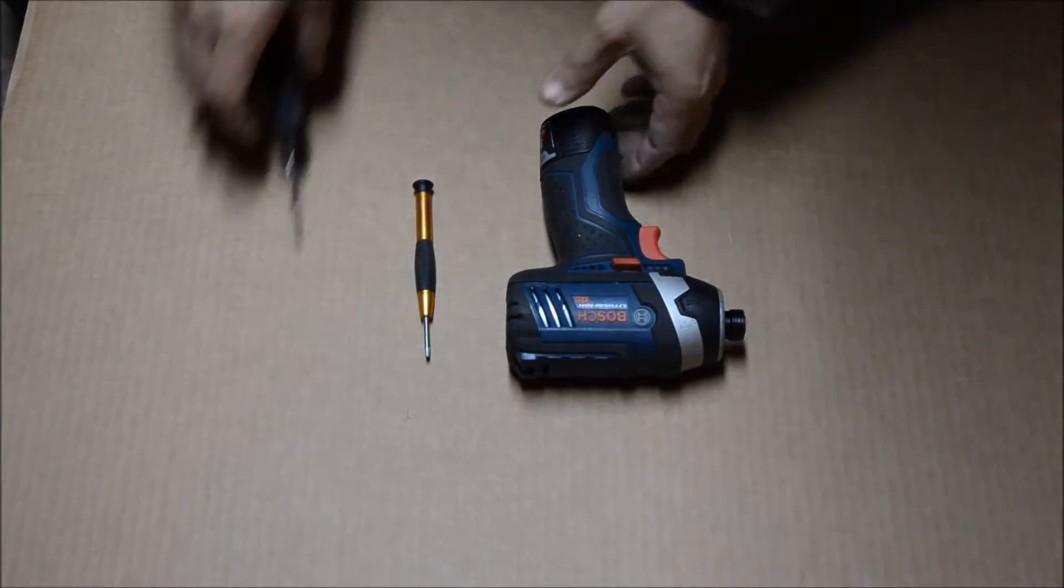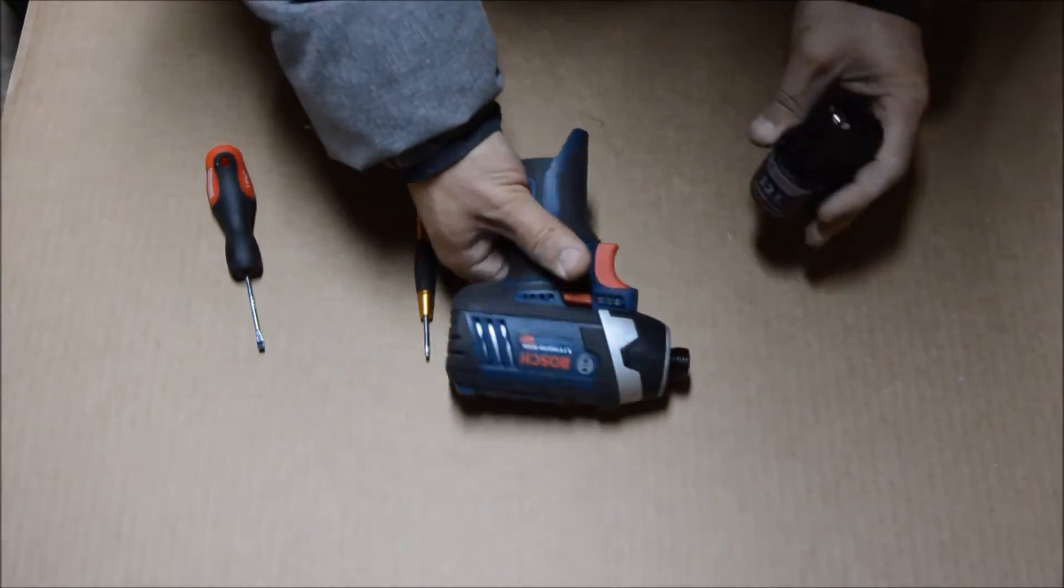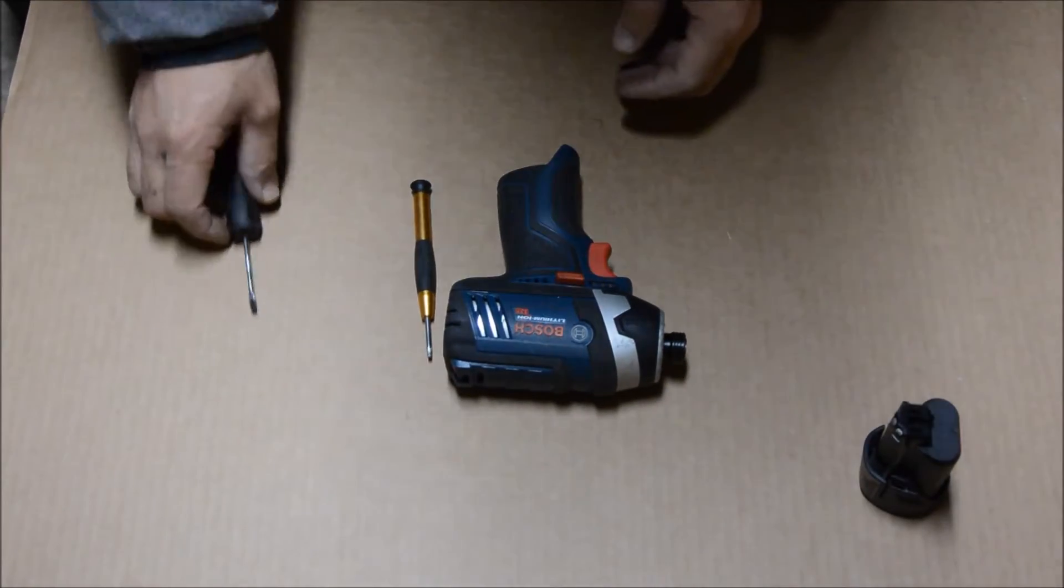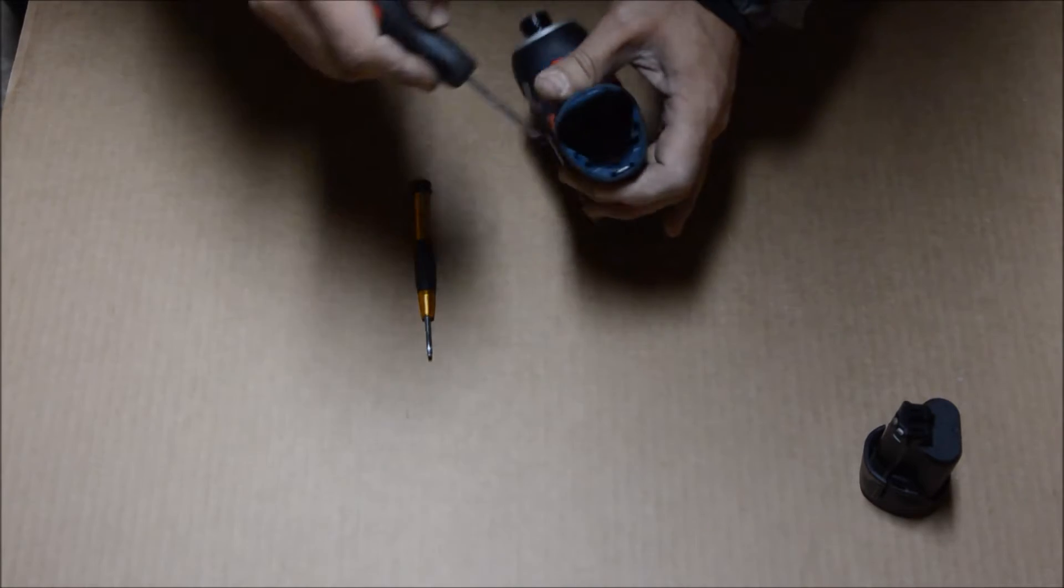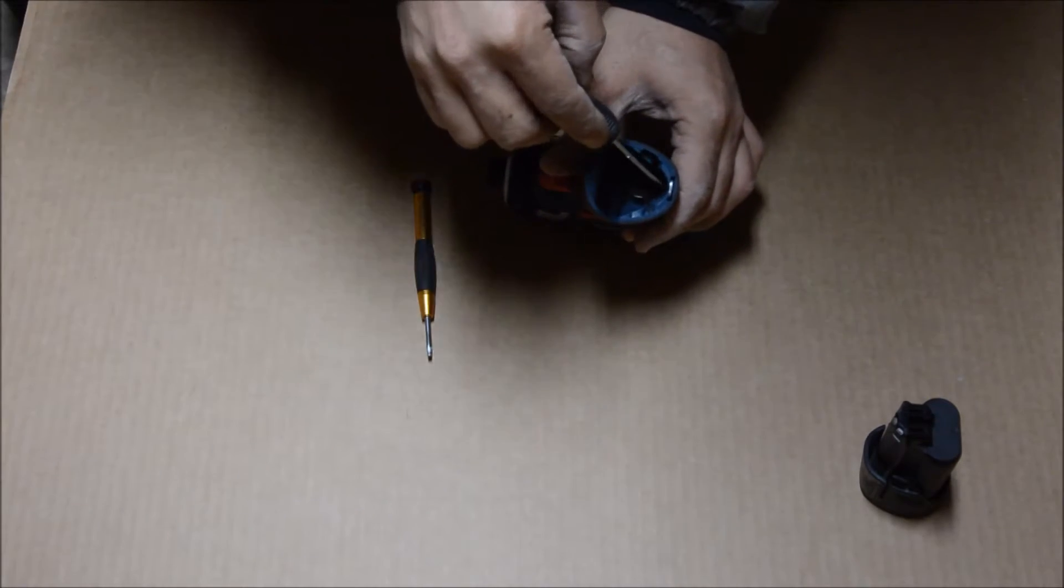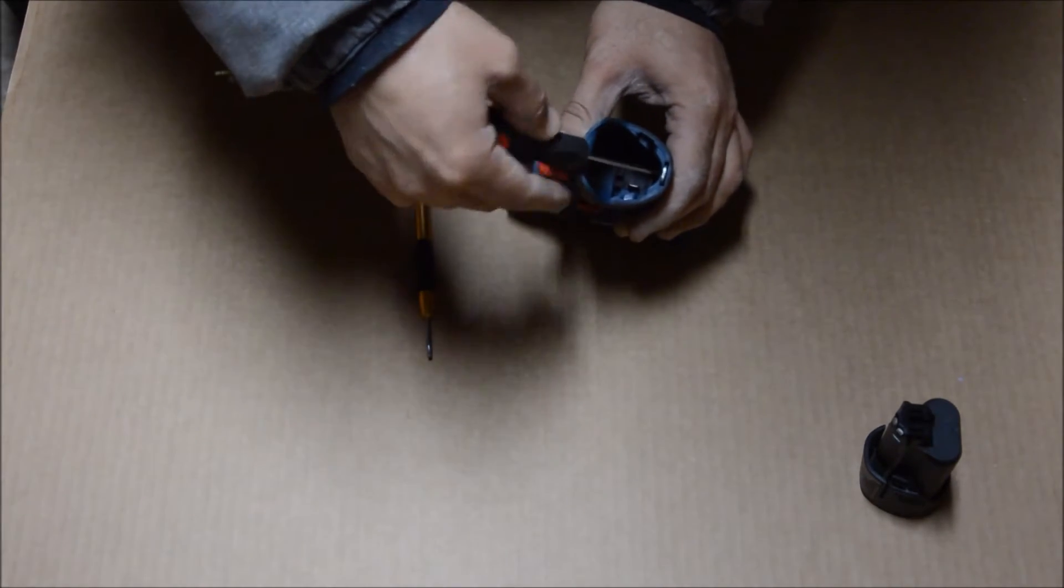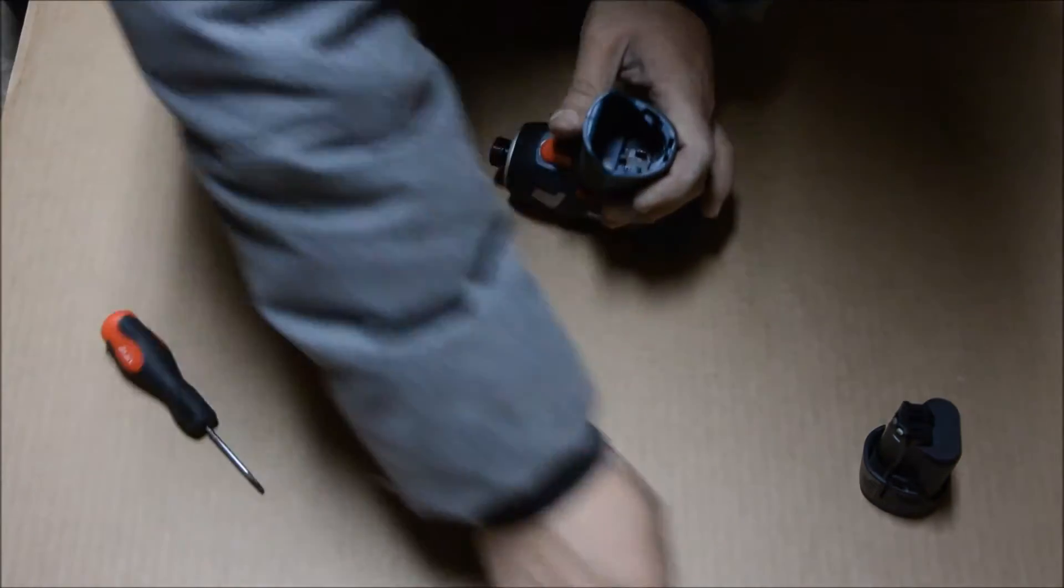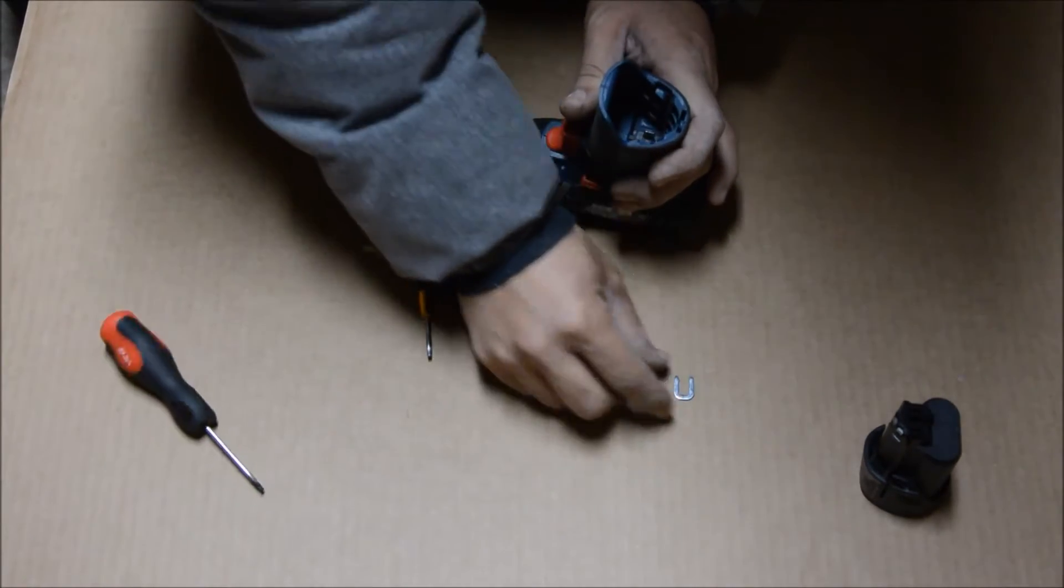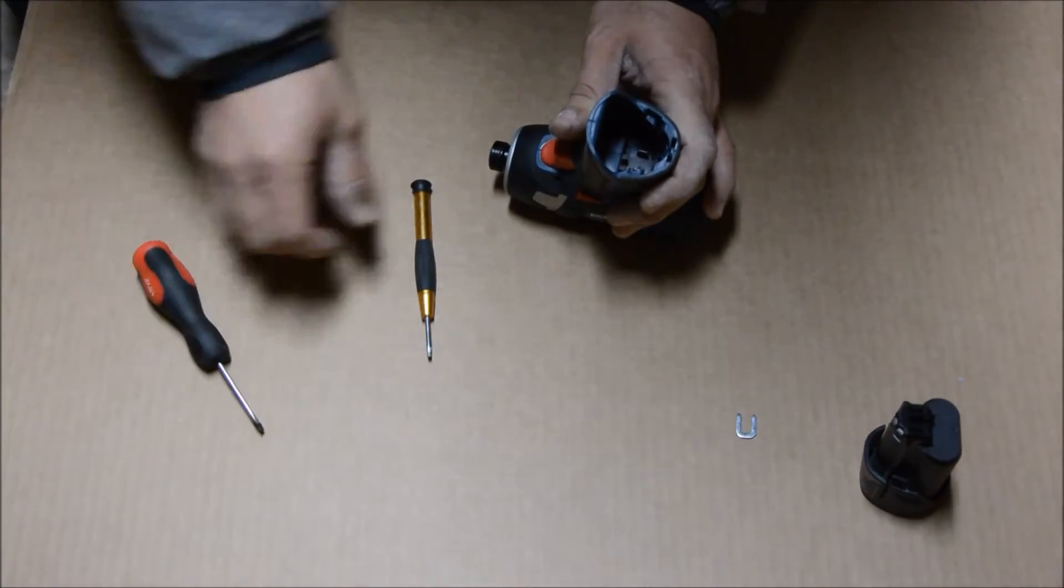The first thing you're going to have to do is remove the battery. Go ahead and put the battery on the side. And before we remove any of the screws, there's actually a small pin right underneath the battery tray. You're going to have to remove that. It's like a horseshoe shaped clip right there. Pull that out.